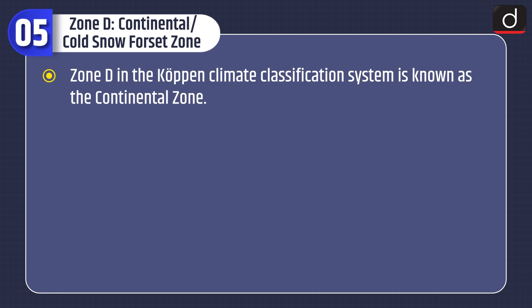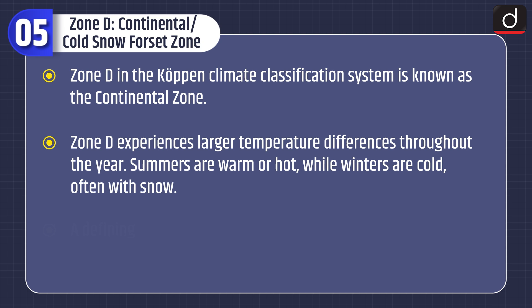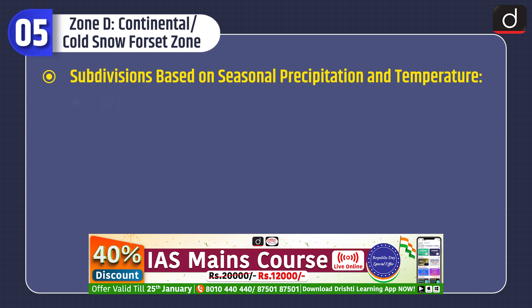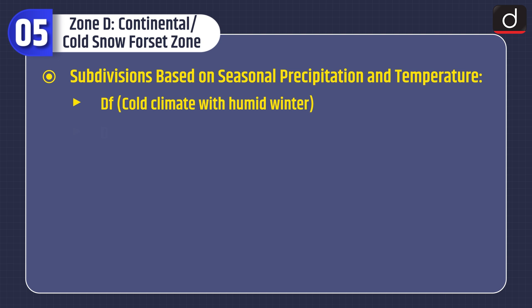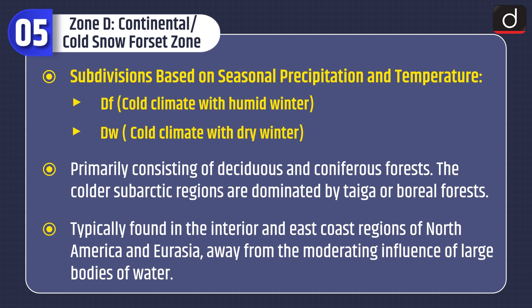Zone D, the Continental or Cold Snow Forest Zone, is known as the Continental Zone in the Koppen Climate Classification System. Zone D experiences large temperature differences throughout the year — summers are warm or hot while winters are cold, often with snow. A defining characteristic is that the coldest month has an average temperature below minus 3 degrees Celsius. Subdivisions are DF, Cold Climate with Humid Winter, and DW, Cold Climate with Dry Winter, primarily consisting of deciduous and coniferous forest. The colder sub-Arctic regions are dominated by Taiga or Boreal Forest, typically found in the interior and east coast regions of North America and Eurasia, away from the moderating influence of large bodies of water.